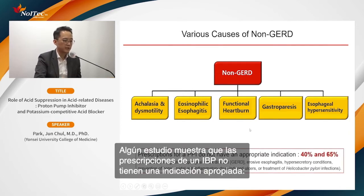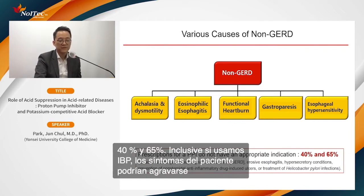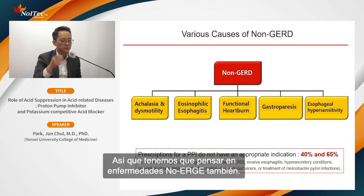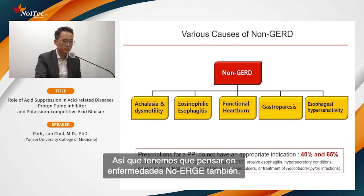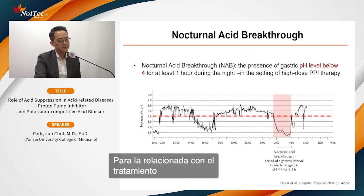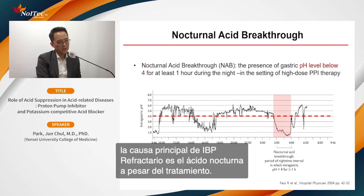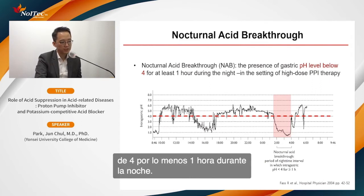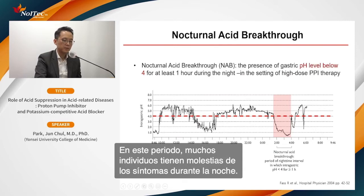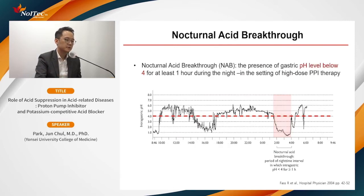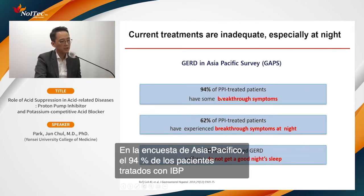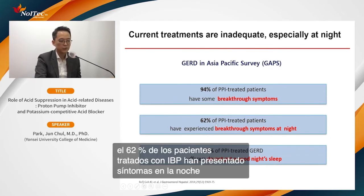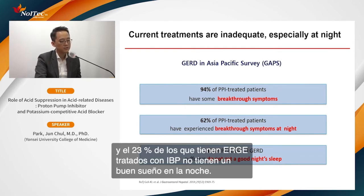The third factor is therapy-related. Nocturnal acid breakthrough (NAB) is defined as gastric pH below 4 for at least one hour during nighttime. In an Asia-Pacific survey, 94% of PPI-treated patients experienced some breakthrough symptoms, 62% experienced breakthrough symptoms at night, and 23% of PPI-treated GERD patients suffered poor sleep as a result.